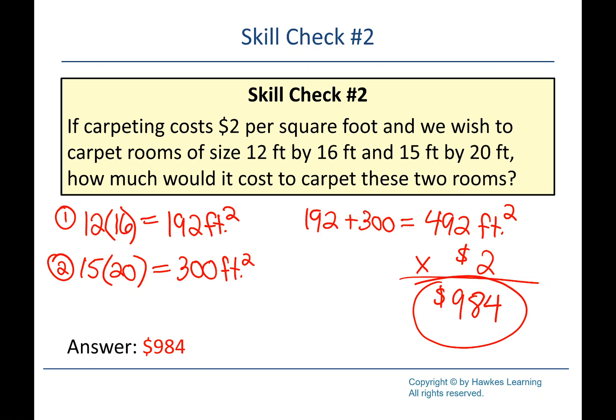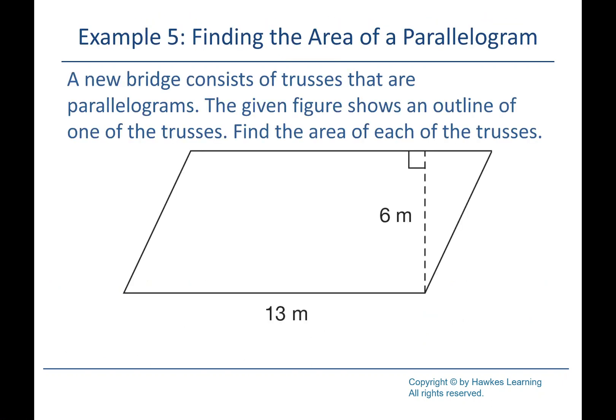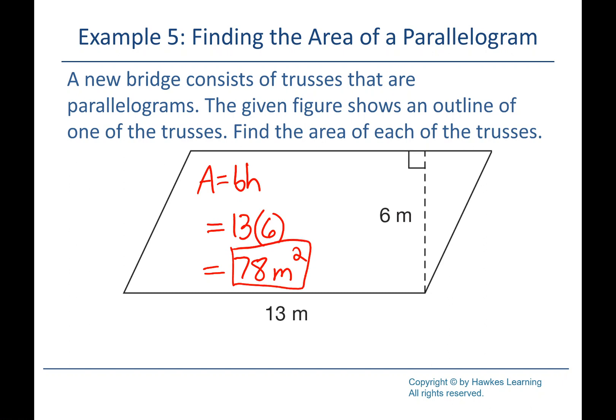Parallelogram example: bridge trusses shaped as parallelograms. The area formula is base × height. The base is 13 meters and the height — the vertical line — is 6 meters, even though the shape is somewhat upside down. Area = 13 × 6 = 78 square meters.